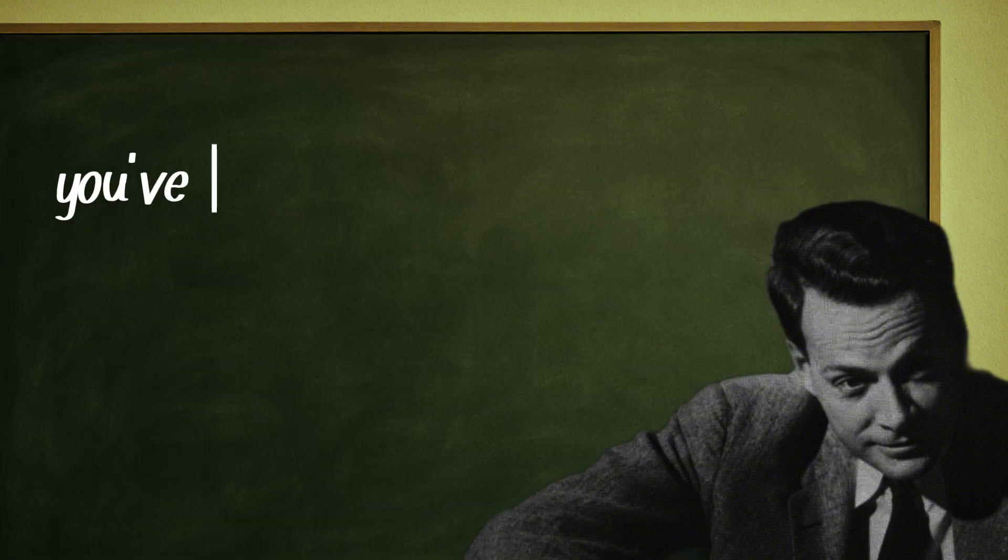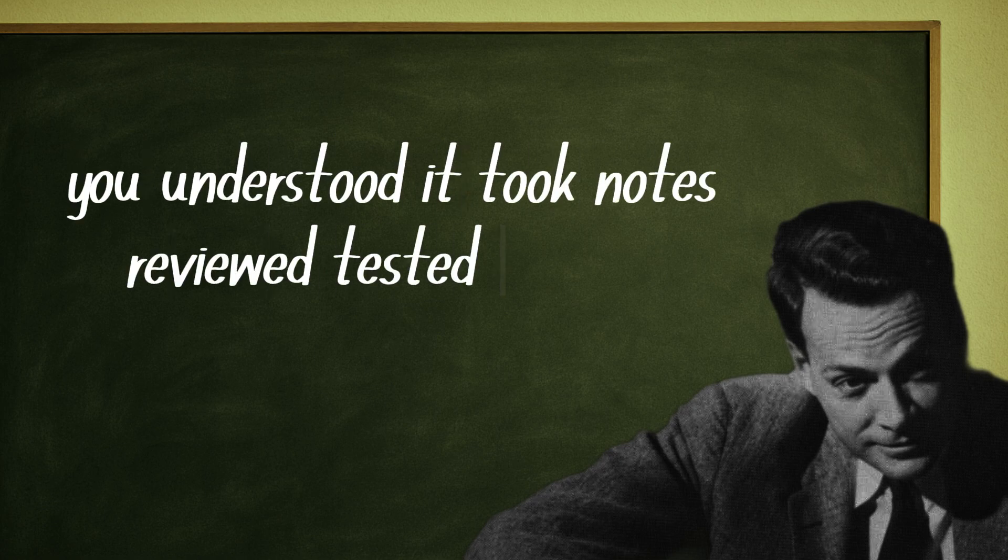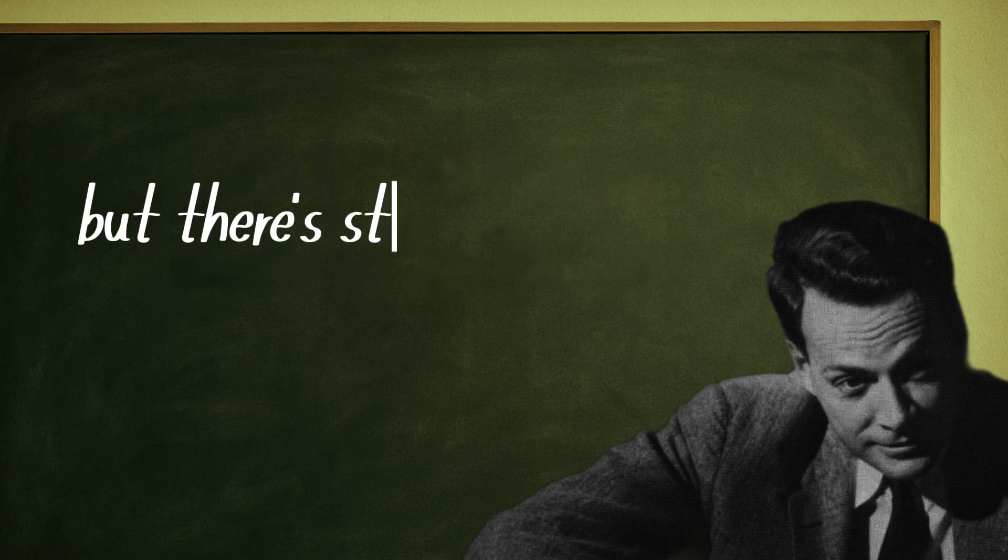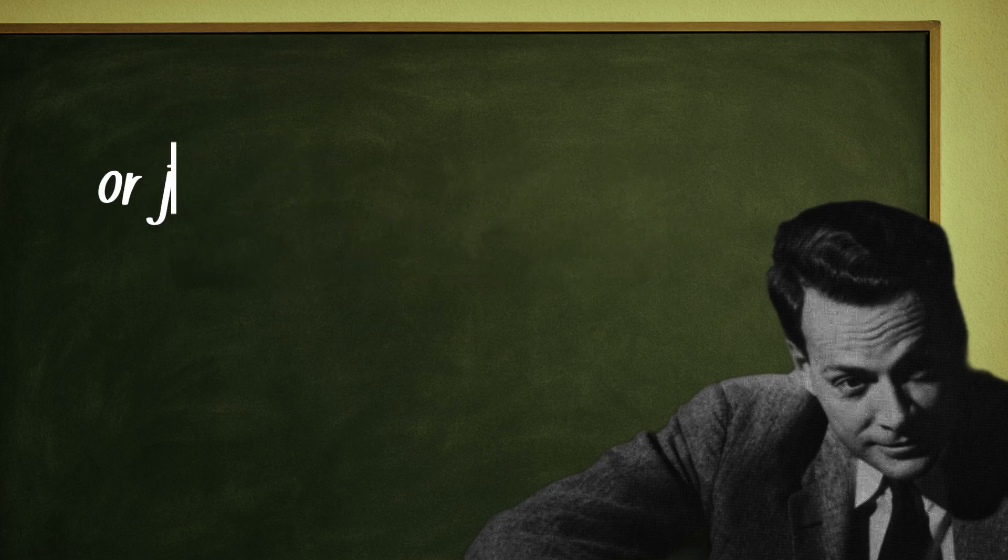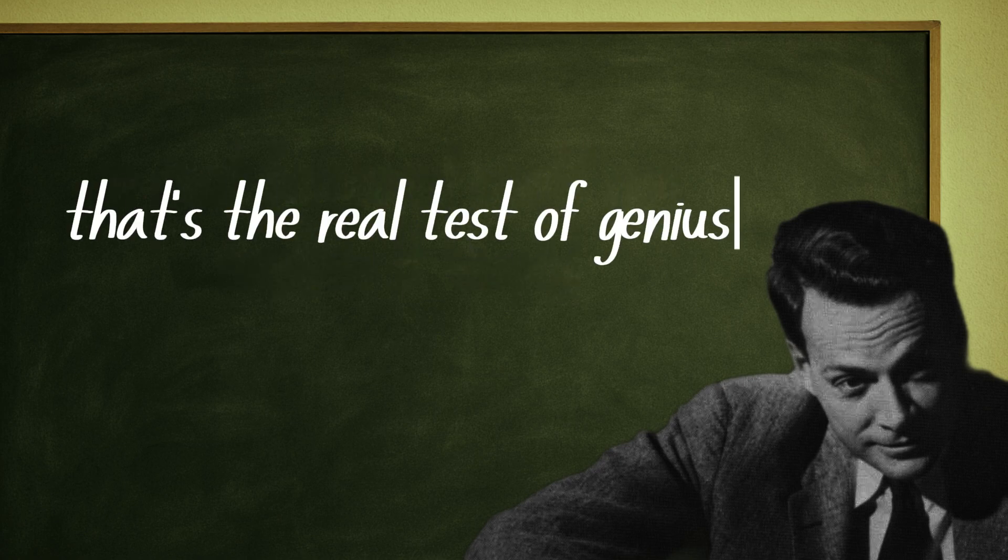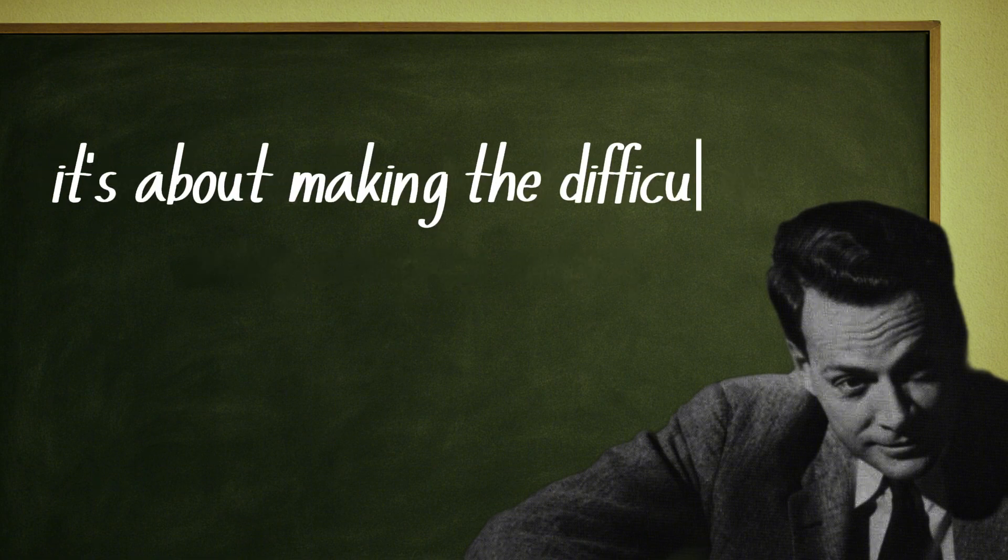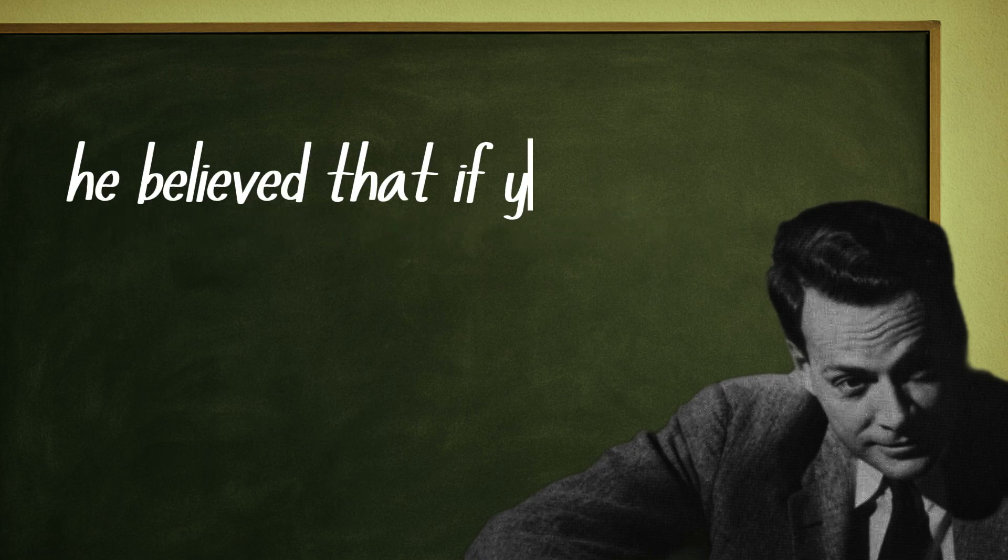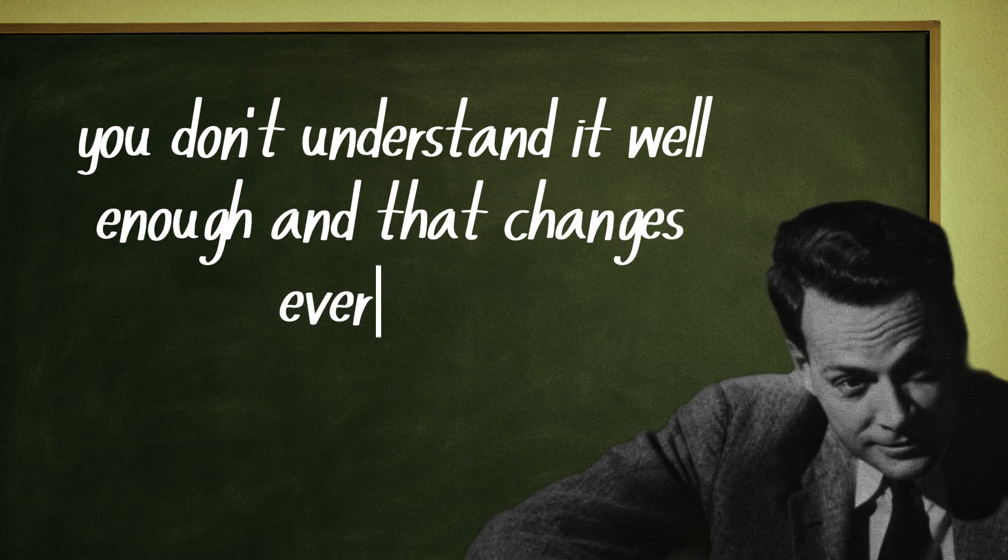Now imagine this: you've just learned something new. You understood it, took notes, reviewed, tested yourself. But there's still one question that defines whether the learning is truly yours or just borrowed: could you explain it simply? That's the real test of genius. It's not about sounding smart or using complex words, it's about making the difficult obvious. This is the Feynman method. He believed that if you can't explain a concept simply, you don't understand it well enough. And that changes everything.